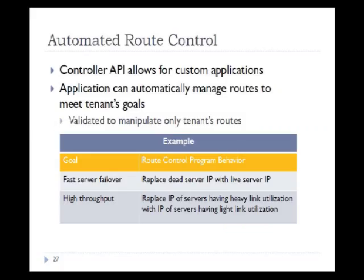In the next slides I'll talk about the properties of BGP-Sharp. First is automated route control: the controller's API allows tenants to develop custom applications that can automatically manage routes to meet their goals, while those requests are validated. For example, if you want faster failover, you could have a program that replaces dead server IPs with live server IPs. For high throughput, you replace IPs of servers with heavy link utilization with IPs of servers having light link utilization.